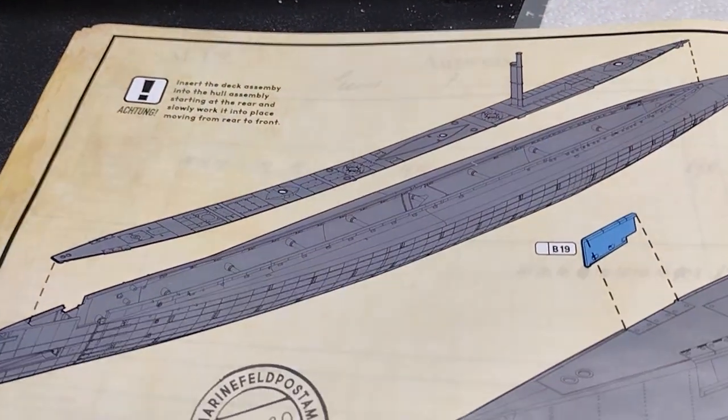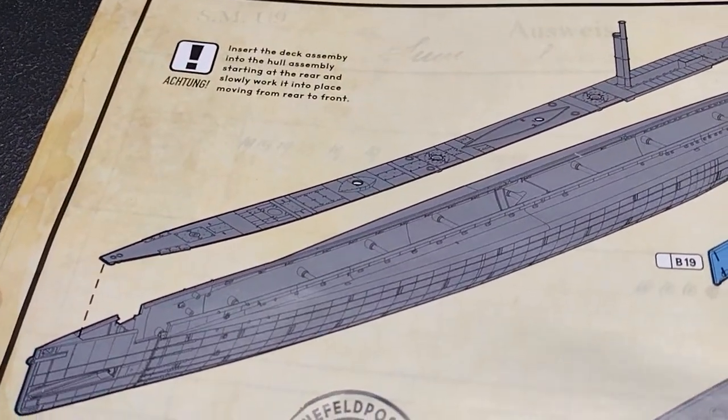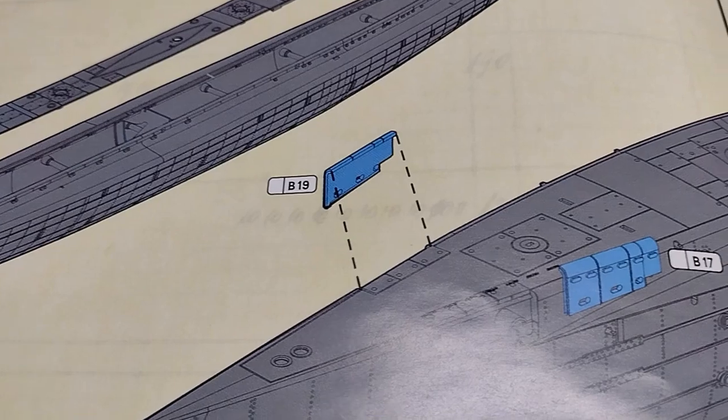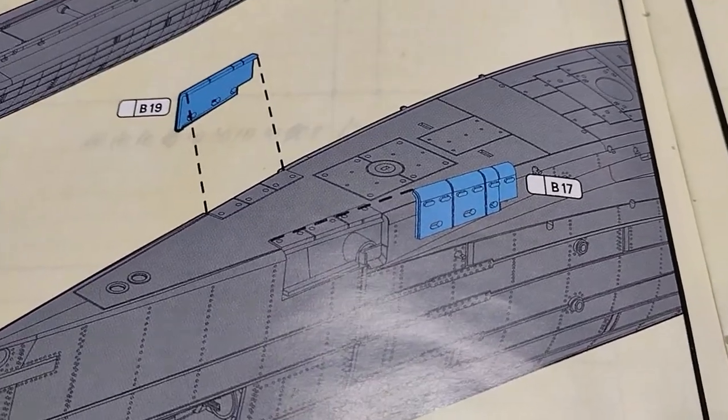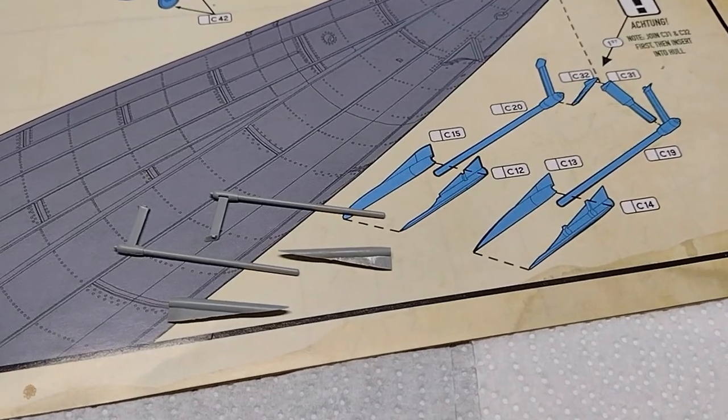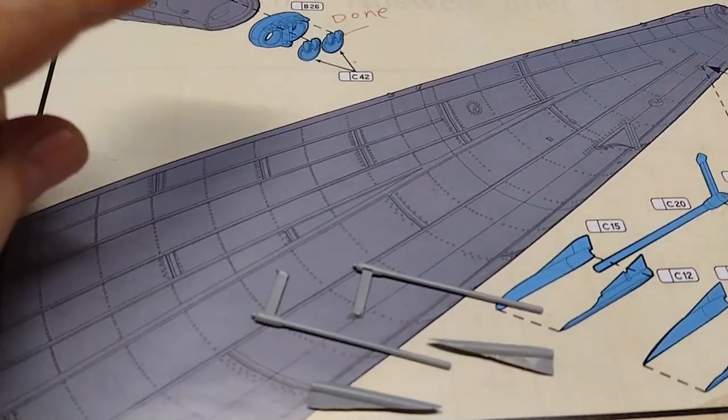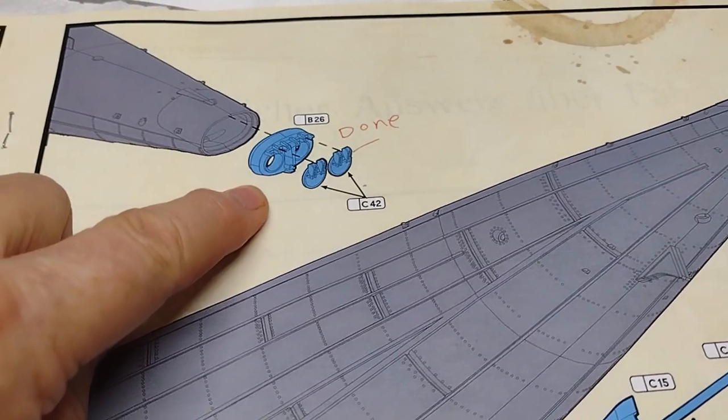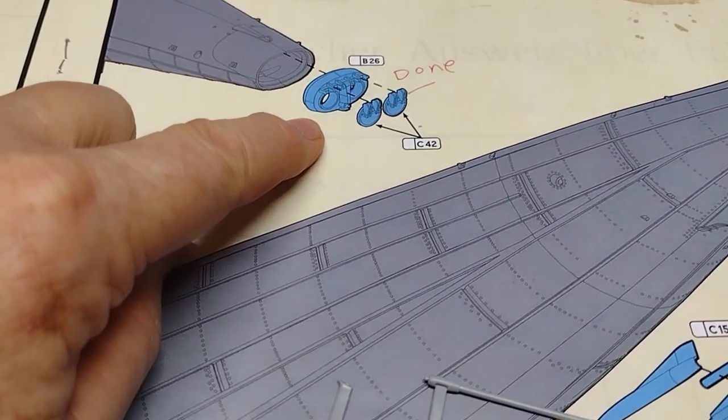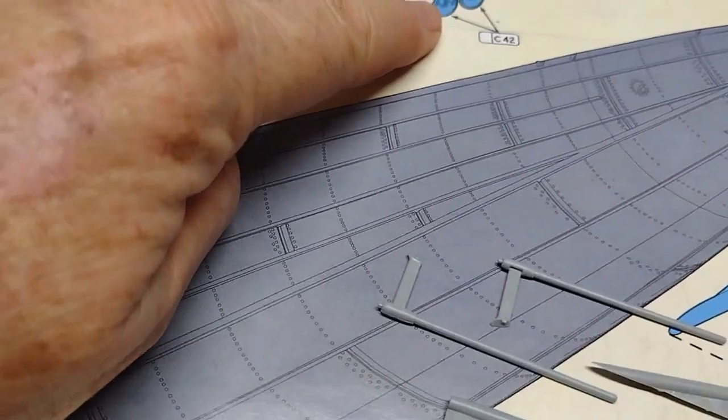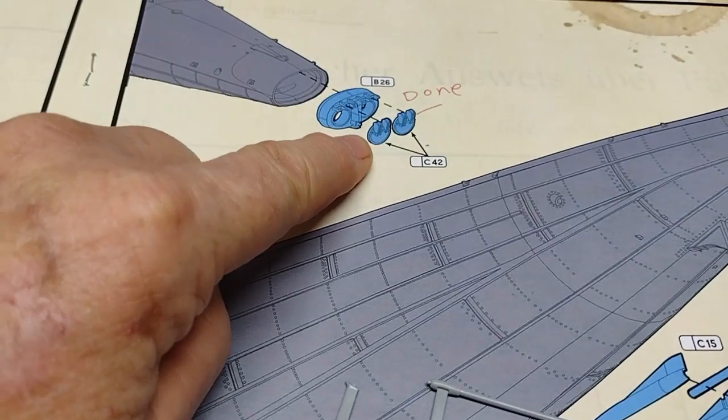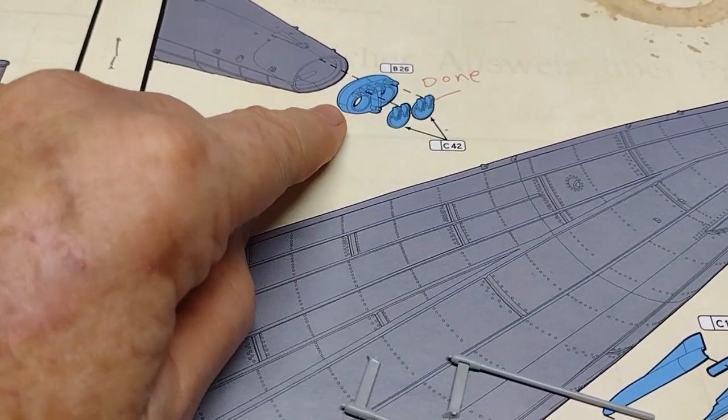Step 3: not only do you put the deck onto the hull, but you add these little pieces right here at the front. So right now I am on page 9, and I put the very stern of the ship together where the rear torpedo hatches are. Got that done.